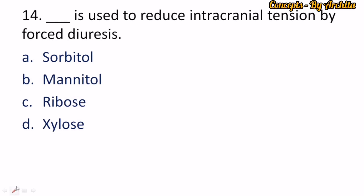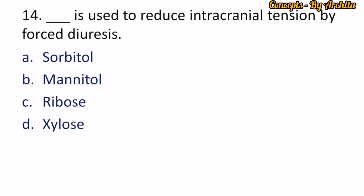Question 14: Name the following which is used to reduce intracranial tension by forced diuresis. Glucose is reduced to sorbitol, and mannose is reduced to mannitol. The correct option is option B — mannitol is used to reduce intracranial pressure and is therefore used as a diuretic.